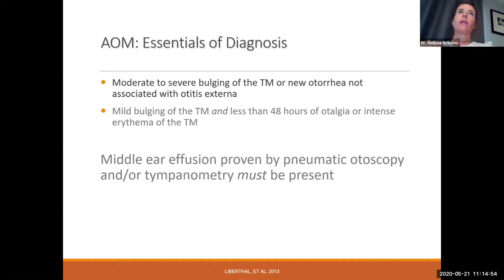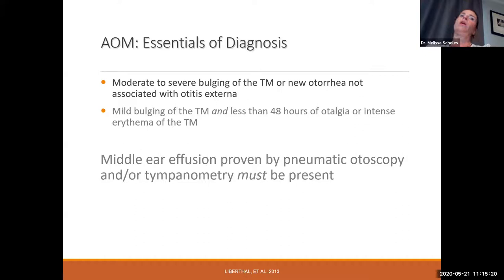The Academy came out with a clinical practice guideline on acute otitis media. These guidelines are produced by a large panel that reviews all the literature and makes evidence-based recommendations. They're a bit dry, but they help you understand the why behind recommendations. The newer guidelines are what we'll go over in depth — they help you extrapolate next steps and educate families.